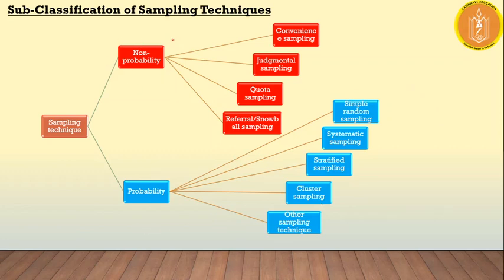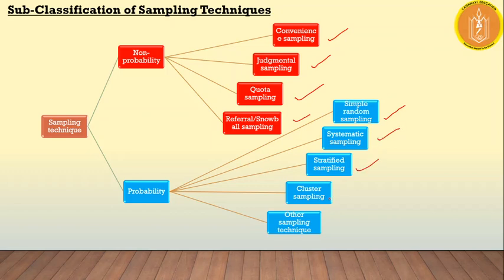If we subdivide, in non-probability sampling there are four types: convenience, judgment, quota, and snowball or referral sampling. In probability sampling there are also four types we will study: simple random, systematic sampling, stratified sampling, and cluster sampling — which is also called multi-stage sampling.